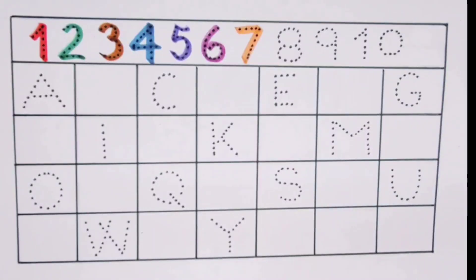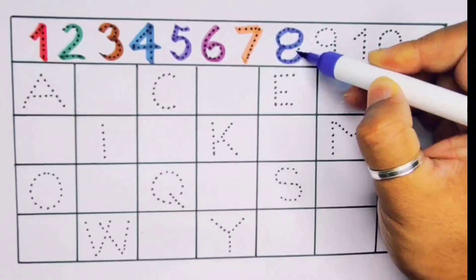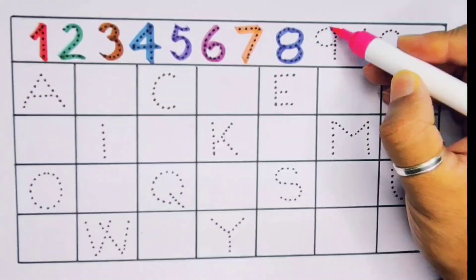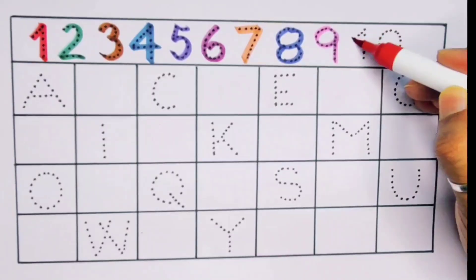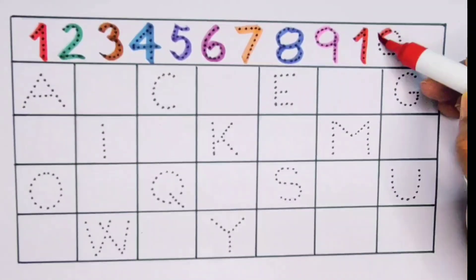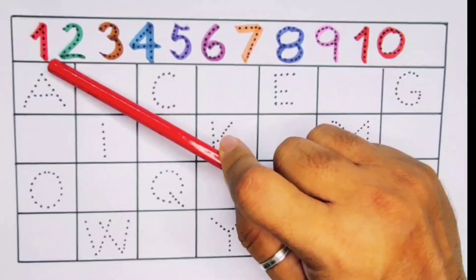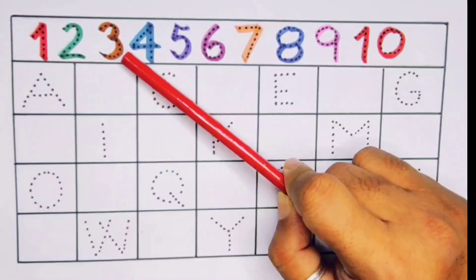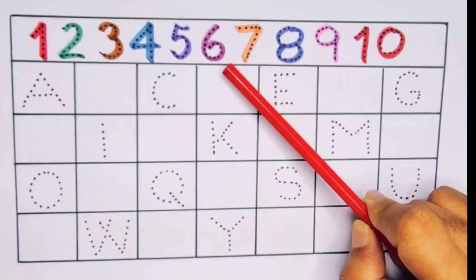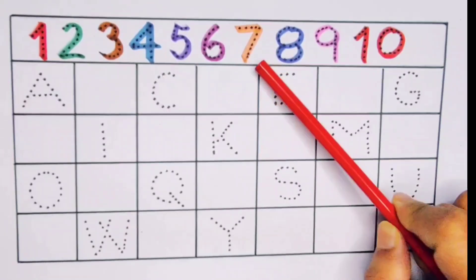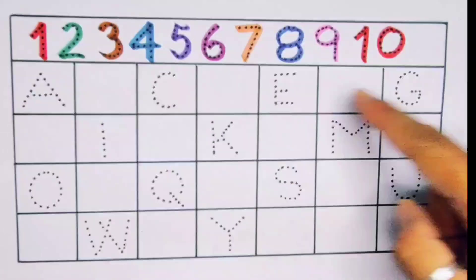Next, eight, number eight. Next, nine, number nine. Next kids, it's ten, one zero, ten, number ten. What we learn? We learn one, two, three, four, five, six, seven, eight, nine, one zero, ten. Now let's learn the alphabet A to Z.